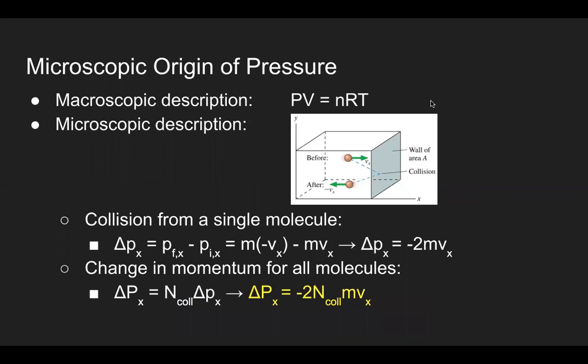For gas molecules inside a container, we know that the ideal gas law PV equals NRT shows us an empirical formula relating the three macroscopic properties: pressure, volume, and temperature. But if we consider looking at a microscopic level, how different would that be?